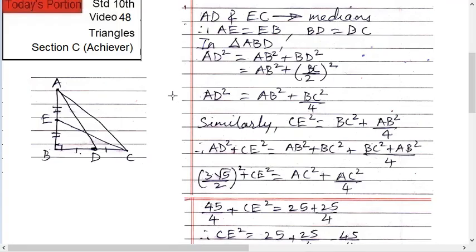Next, in triangle ABD, AD square equals to AB square plus BD square. Right. ABD: AD square equals to AB square plus BD square. Therefore AB square plus BD is what? BC upon 2 the whole square. Therefore BC square upon 4. So AD square equals to AB square plus BC square upon 4.